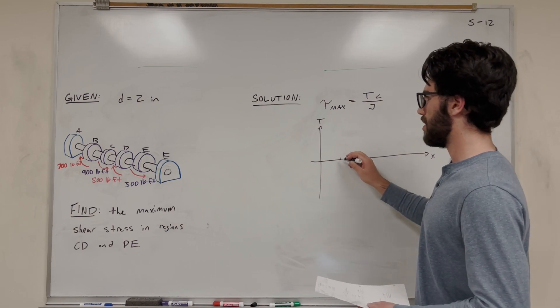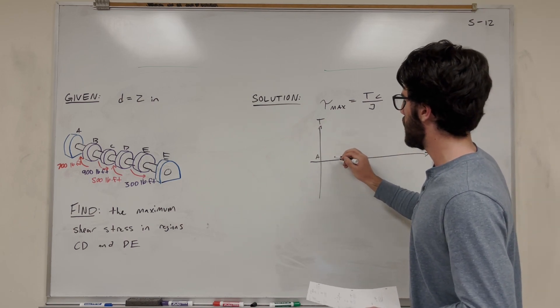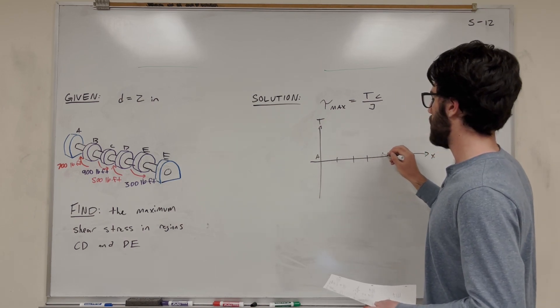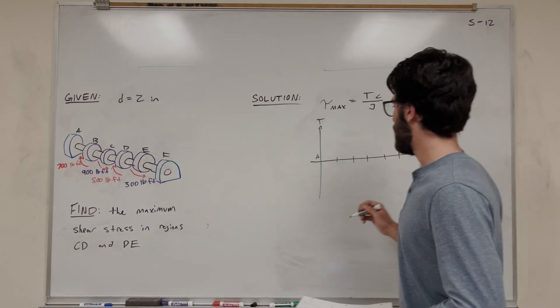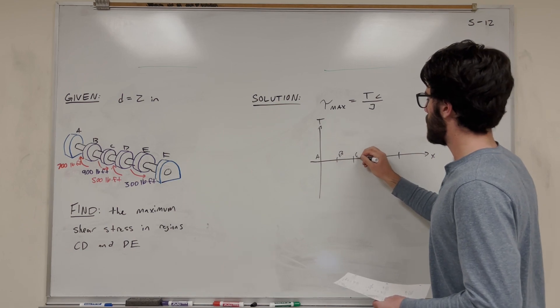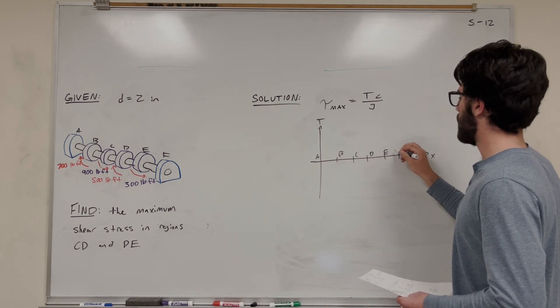So we're going to break it up into the sections. So this is A at the beginning, and it's going to be B, C, D, E, F. So we want to find what's the torque in each one of these sections.